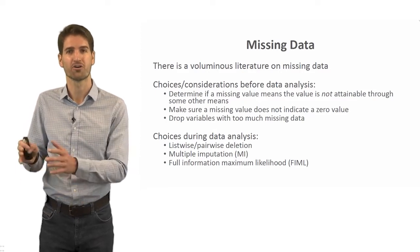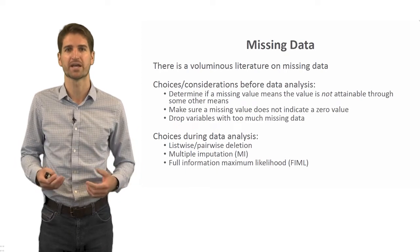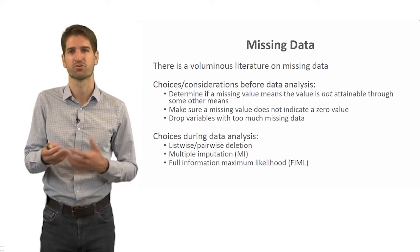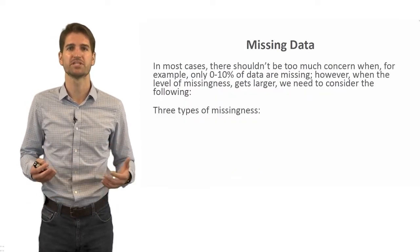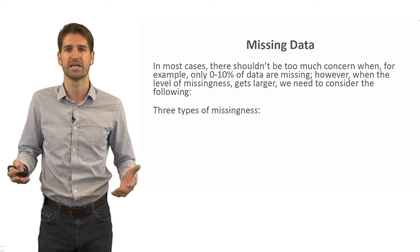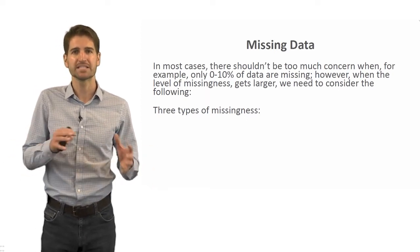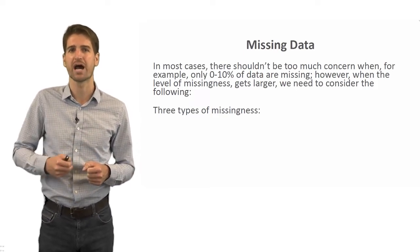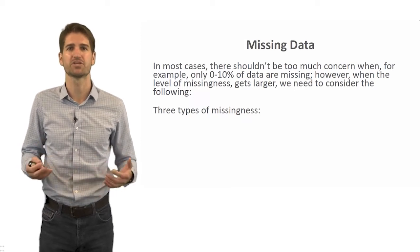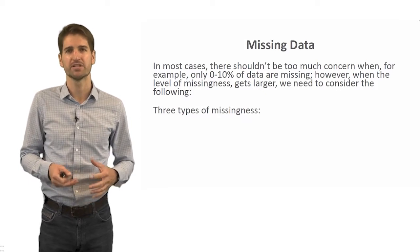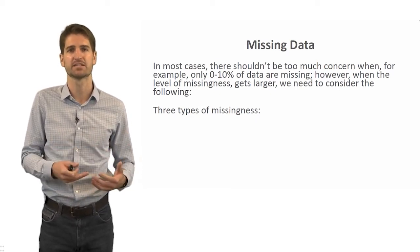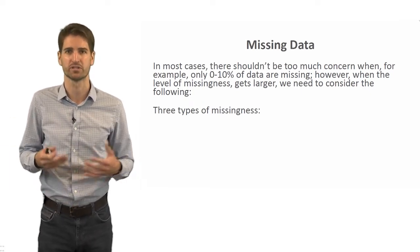Multiple imputation used to be a lot harder to do just ten years ago, but now there are R packages that help you deal with that. Full information maximum likelihood is possible in, for instance, the lavaan package in R for path analysis and regression. When it comes to missing data, there's usually not too much concern when you're missing 0 to 10 percent of the data, but higher proportions raise concerns and we need to ask what type of missingness it is. This gets somewhat theoretical, so I'll briefly touch on the three types of missingness.